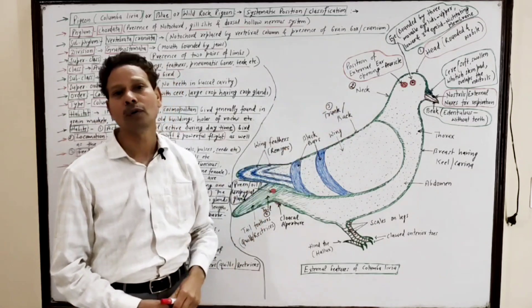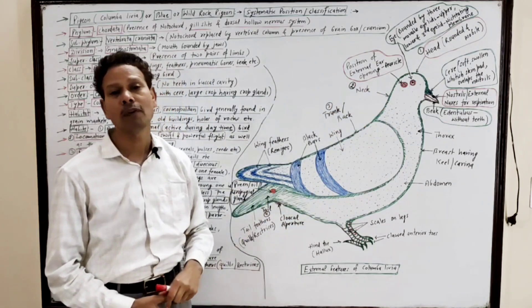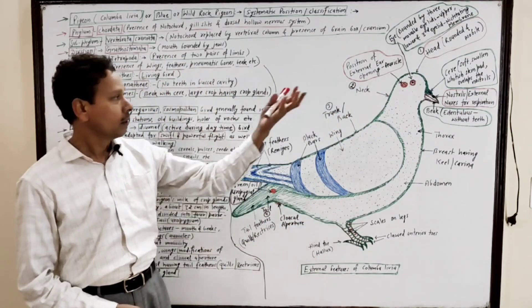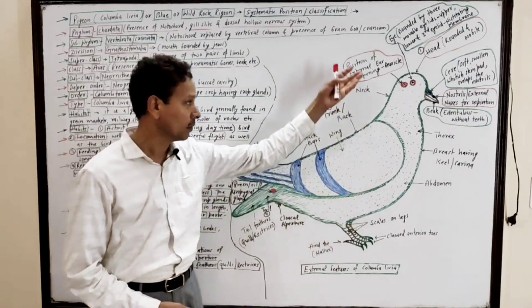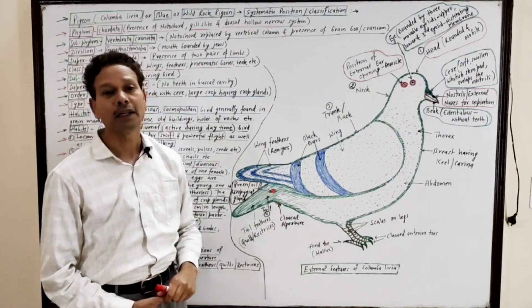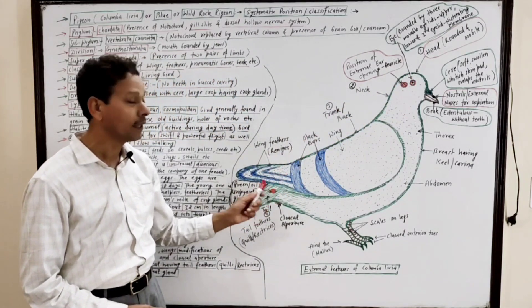This is all about systematic portion, classification of pigeon, as well as external morphology of pigeon. The entire body which is streamlined shows bilateral symmetry and is divided into four parts: head, neck, trunk, and tail.